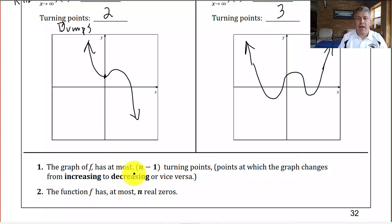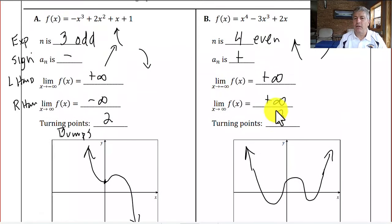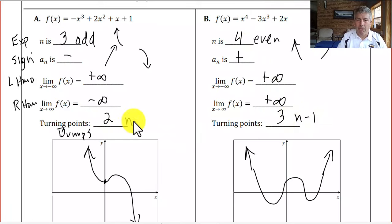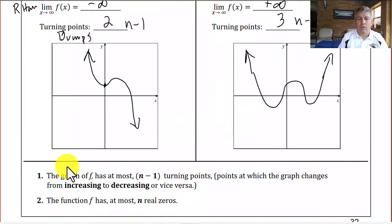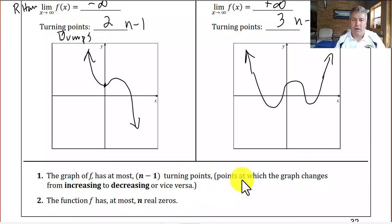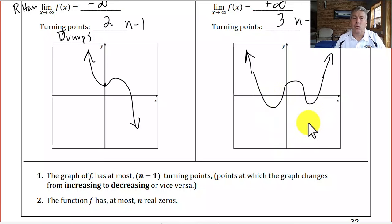The graph has at most n minus 1 turning points — where the graph changes from increasing to decreasing or vice versa. A fourth-degree polynomial has at most three turning points, so n minus 1 equals 3. It also has at most n real zeros. A fourth-degree polynomial could have 1, 2, 3, or 4 x-intercepts, though it may not have exactly that many.